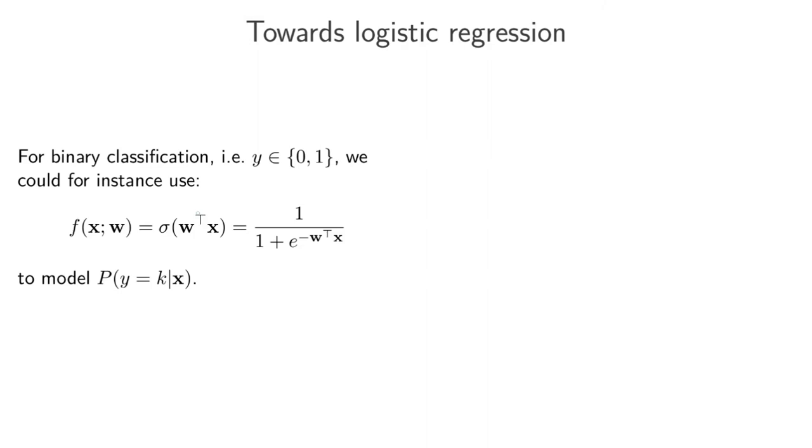So what this model does here is it basically says, let's take something that looks like the output of linear regression, but let's then squash it with this function here to be between 0 and 1. And this function here, that thing there, which is defined just on the other side, that's called the sigmoid function. And I'll draw it out in a second.